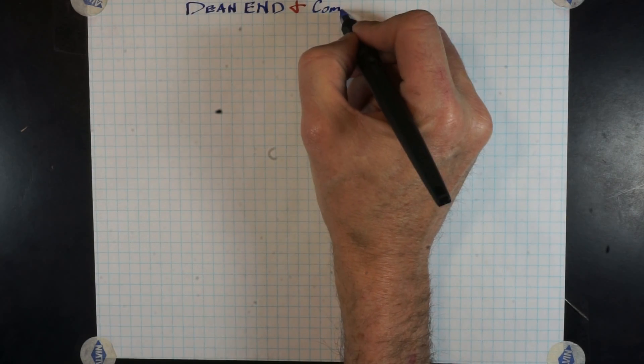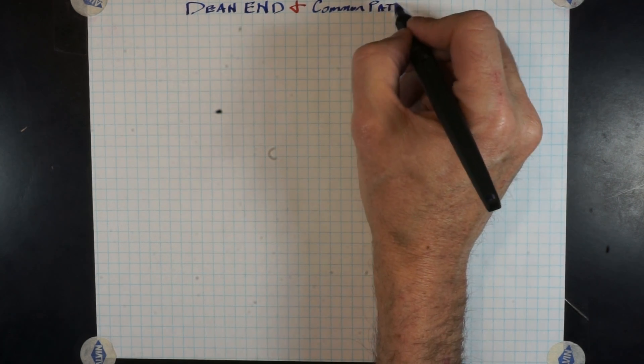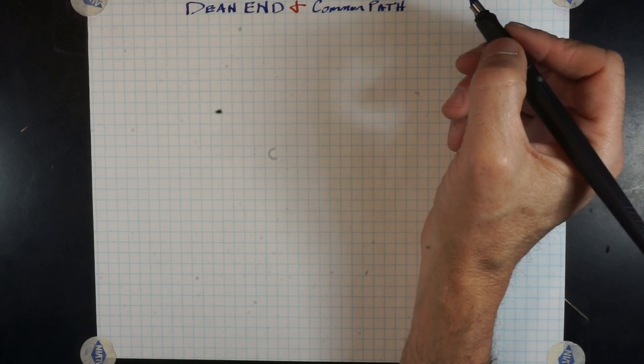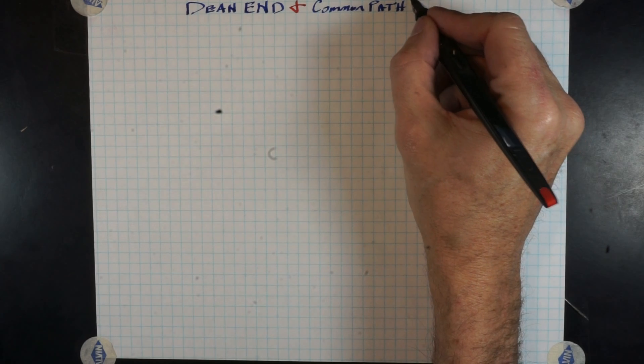Dead-end and common path of travel are commonly misunderstood as topics that are similar to each other, but not quite. Dead-end corridors is anything beyond the exit, even one inch.